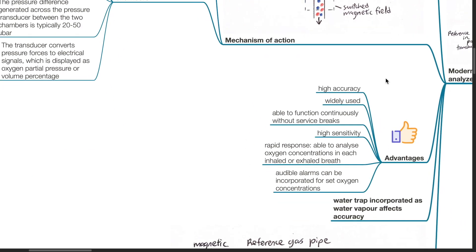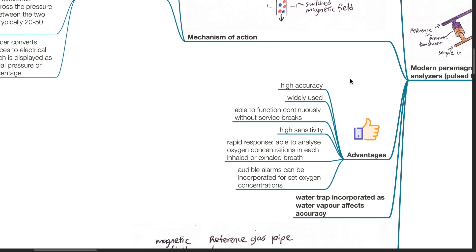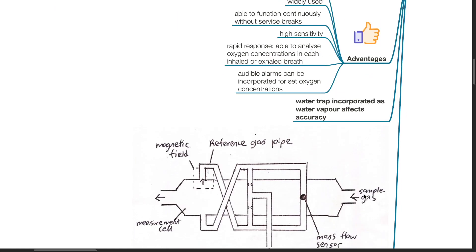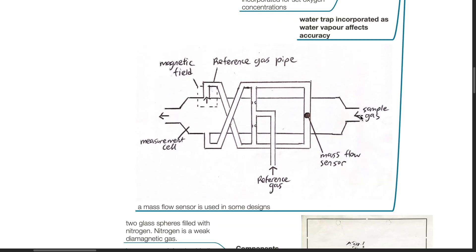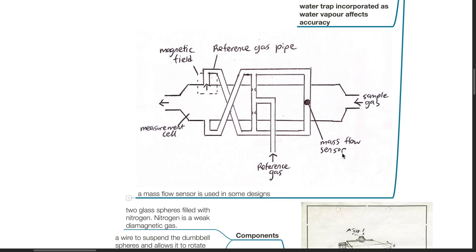Advantages of the modern paramagnetic oxygen analyzer: it is highly accurate and widely used, able to function continuously without service breaks, and has high sensitivity and rapid response, able to analyze oxygen concentrations in each inhaled or exhaled breath. Audible alarms can be incorporated for set oxygen concentrations. A water trap is incorporated as water vapour affects accuracy, and a mass flow sensor is used in some designs.